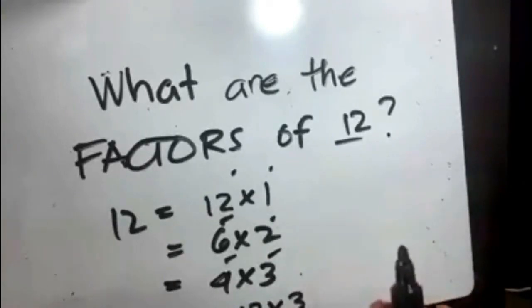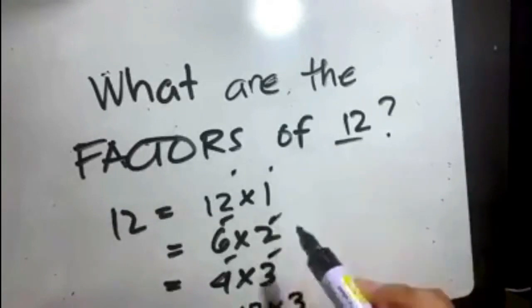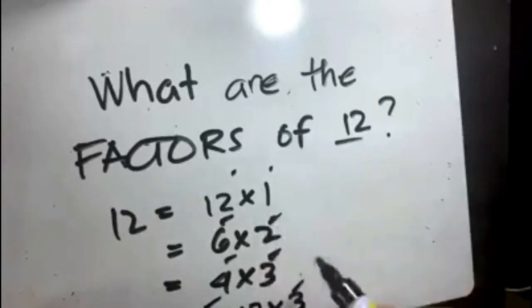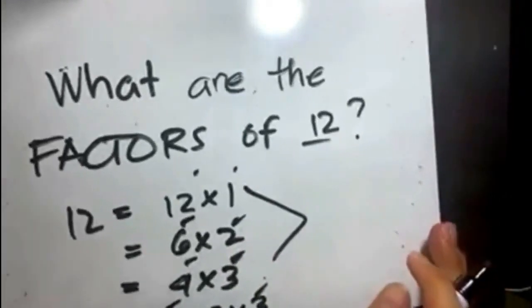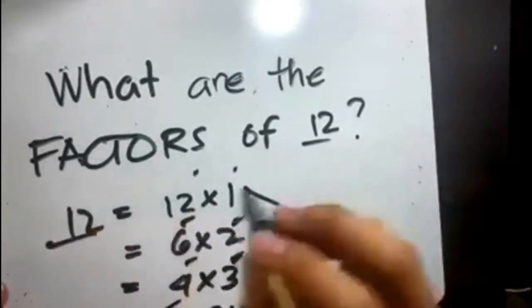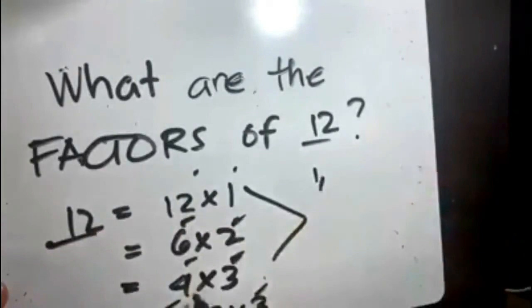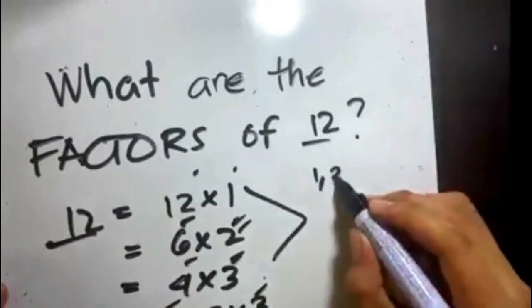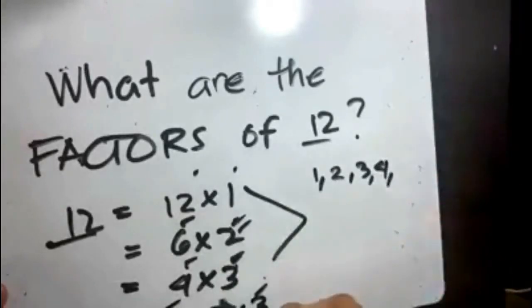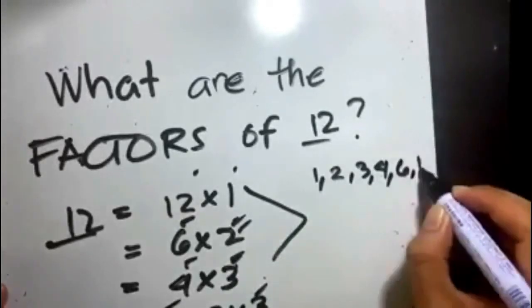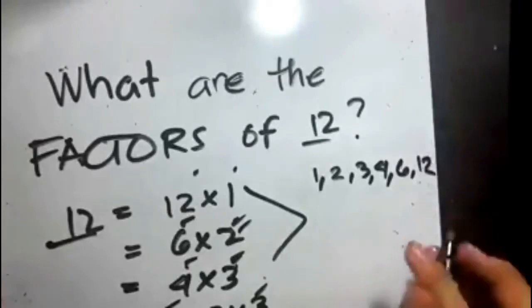Although we can have 2 times 2 times 3, it is already present in this given. So what we can conclude right now is that the factors of 12 are, in order: 1, 2, 3, 4, 6, and 12.